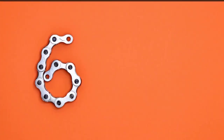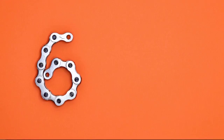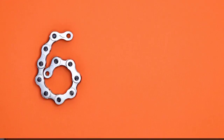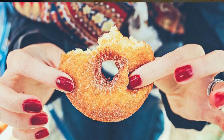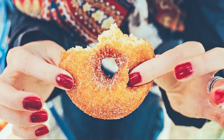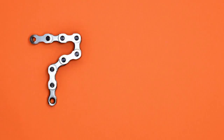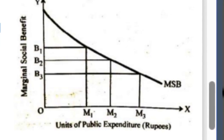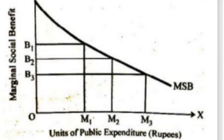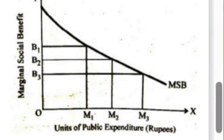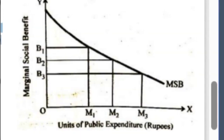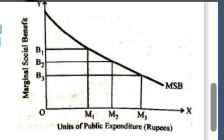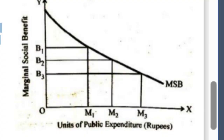Understanding Diminishing MSB: Picture MSB like the diminishing enjoyment of your favorite food. As you consume more, the additional satisfaction from each bite decreases. Visualizing the MSB Curve: Envision a graph where the x-axis represents the amount of public expenditure, OM, and the y-axis represents MSB, OB. As public expenditure rises from OM to OM1 to OM3, the MSB falls from OB1 to OB2 to OB3.